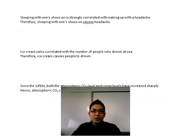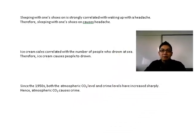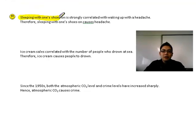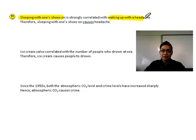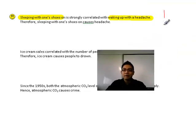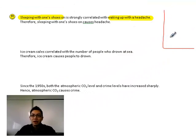Here are three interesting examples for you. Sleeping with one's shoes on is strongly correlated with waking up with a headache. Therefore, sleeping with one's shoes on causes headaches. That seems kind of silly, but although these two variables are strongly correlated, if you had to draw a graph, maybe you'd get a positive relationship like this. But just because you see a nice strong positive relationship doesn't necessarily mean that this is directly causing this.